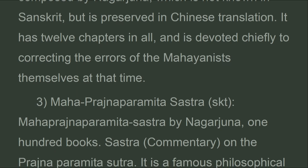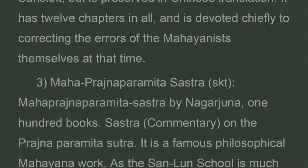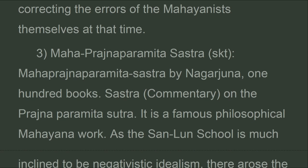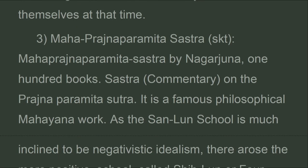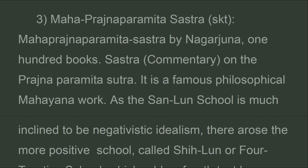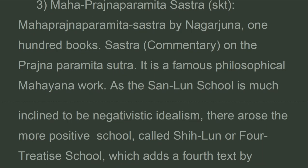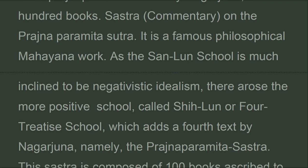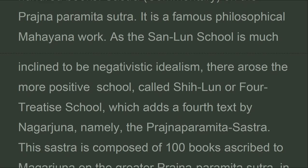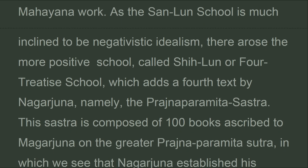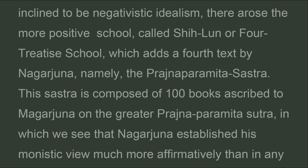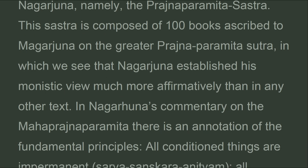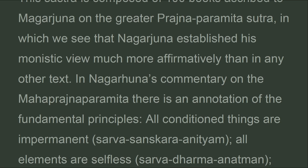Third, the Mahaprajnaparamita Sastra (Skt.), by Nagarjuna, in 100 books — a sastra commentary on the Prajnaparamita Sutra and a famous philosophical Mahayana work. As the San Lun school is much inclined to negativistic idealism, there arose the more positive school called Xi Lun, or the Four Treatise school, which adds a fourth text by Nagarjuna — the Prajnaparamita Sastra, composed of 100 books, in which Nagarjuna established his monistic view more affirmatively than in any other text.